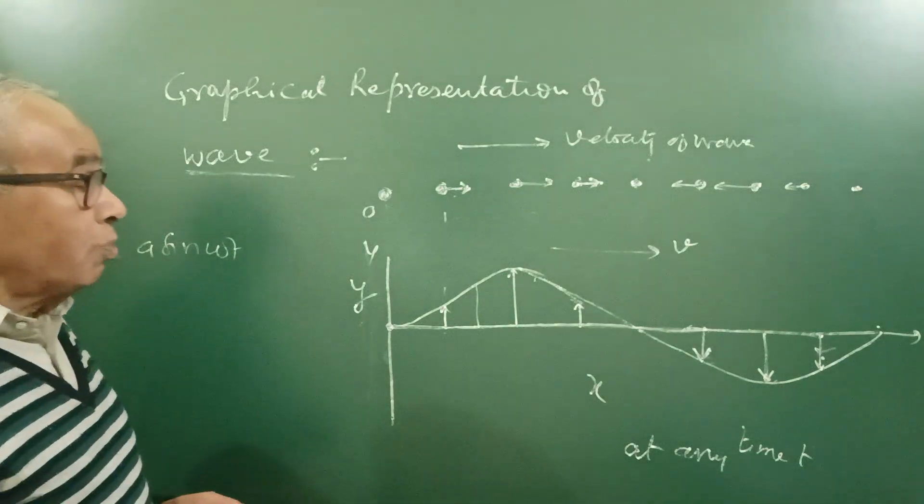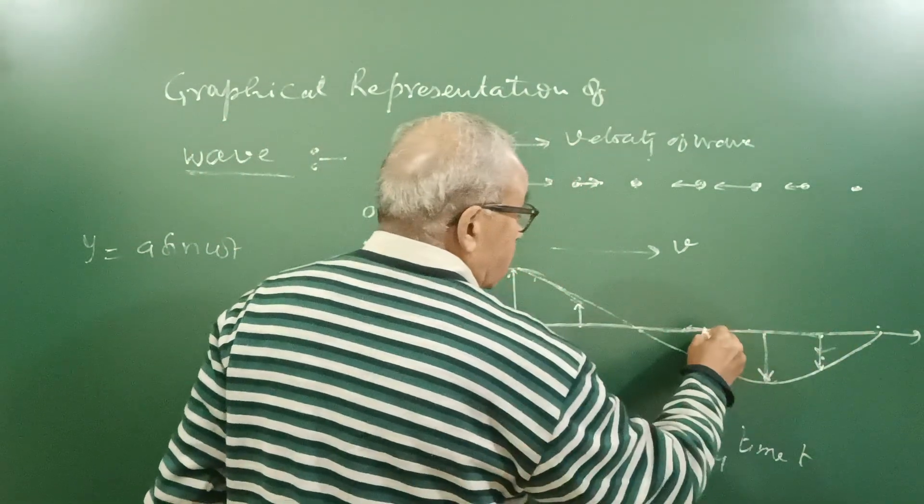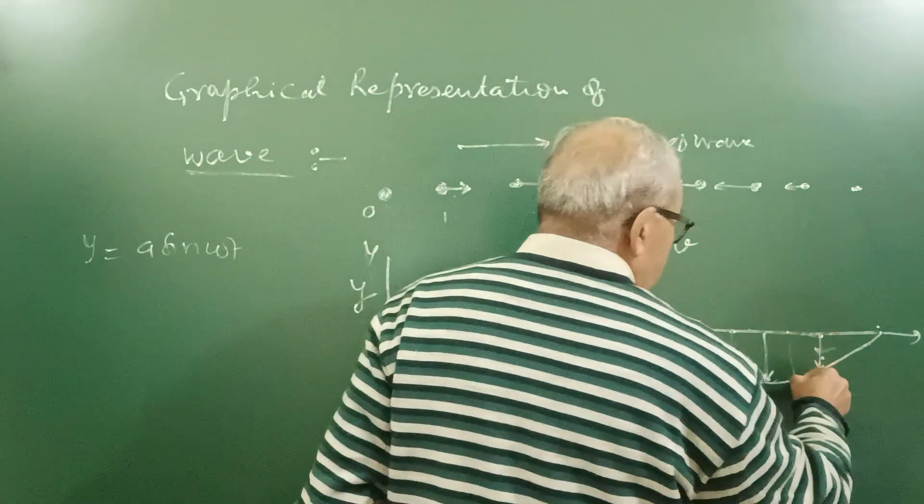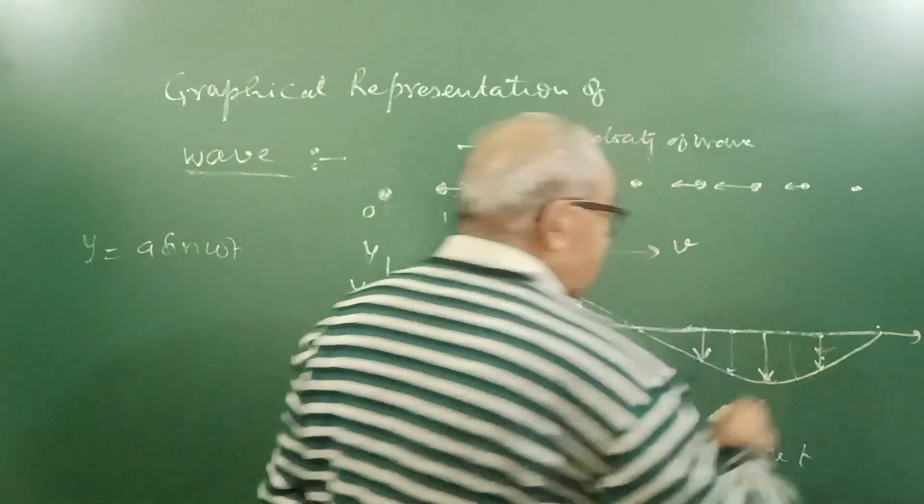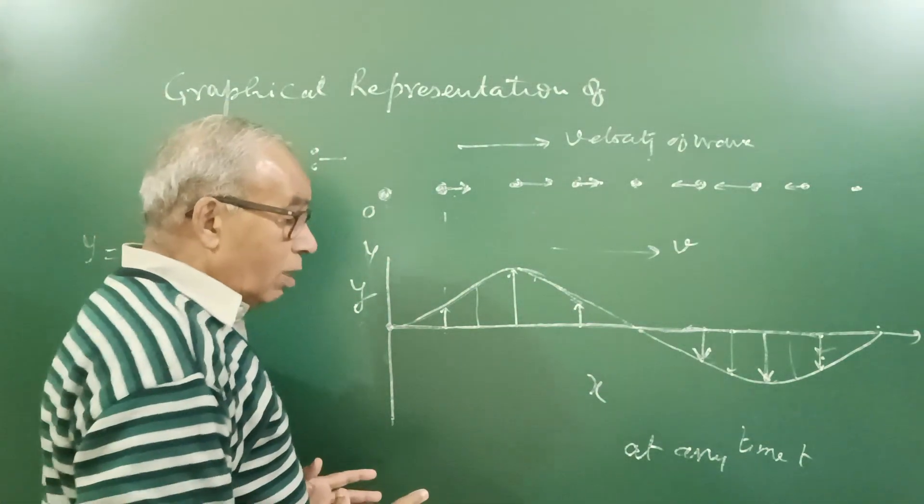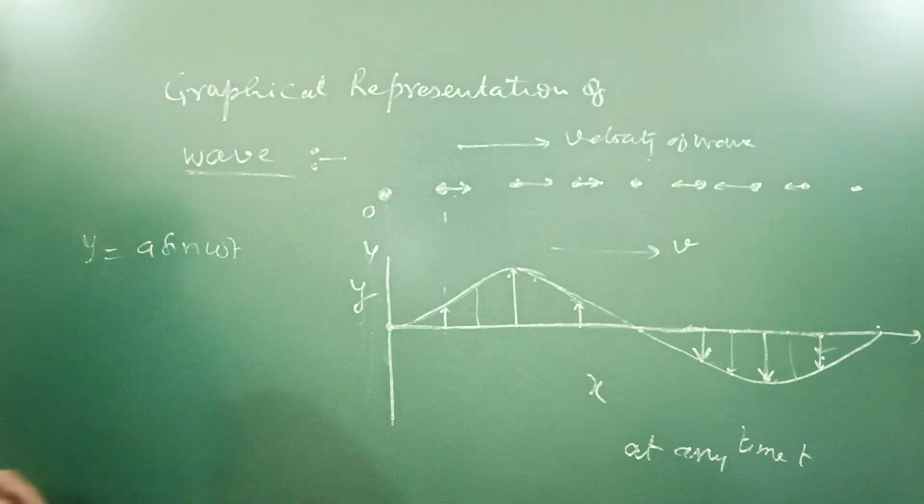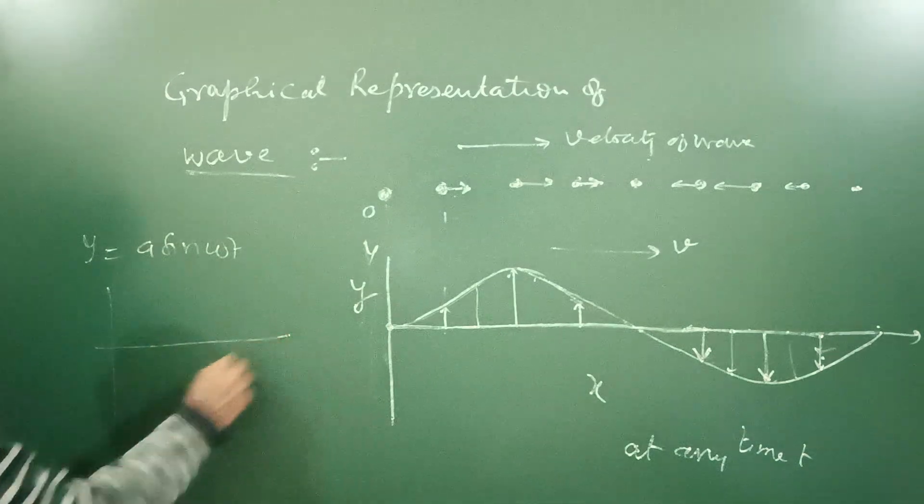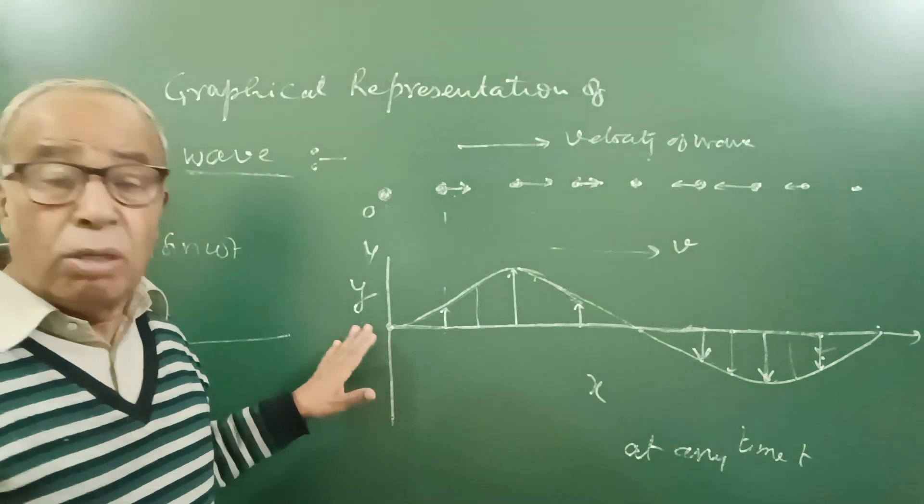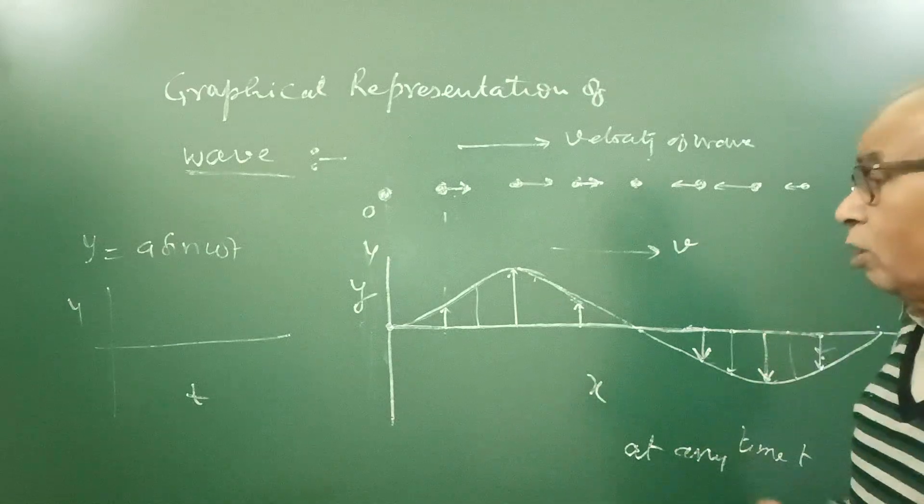But generally, we will understand that the wave is going like this. No. This tells, here the displacement of particle is this much. Here is this much. And this displacement is varying with time. We have shown this at a given particular time. It may be y-t graph also. That is for one particle. It is for all particles of wave. So I hope you will enjoy now.